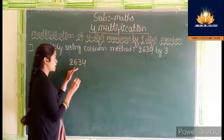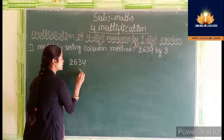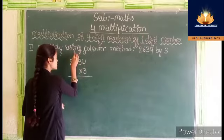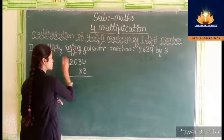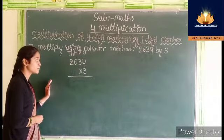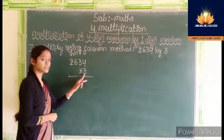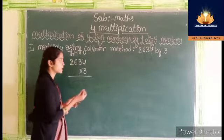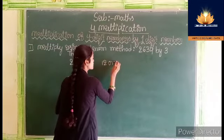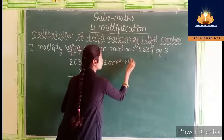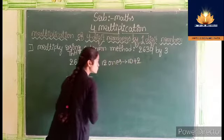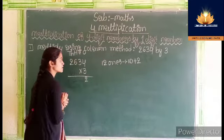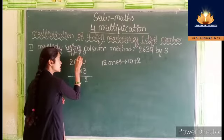Below the multiplicand we have to write the multiplier. This is 1s place, 10s place, 100s place, and 1000s place. First we have to multiply 4 ones by 3. So 3 fours are 12. We get 12 ones. In 12 ones there are 1 ten and 2 ones.